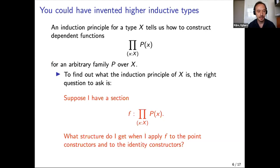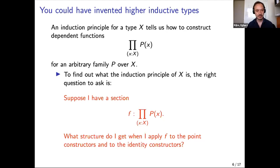The dependent function should be uniquely determined by the data you get from applying it to the point constructors and identity constructors. There are not only point constructors but also path constructors, so we need to know what it means to apply a dependent function to an identification in the space X. We saw this in the cubical proof system, and now I'll show you again in the more synthetic homotopy theory setting.